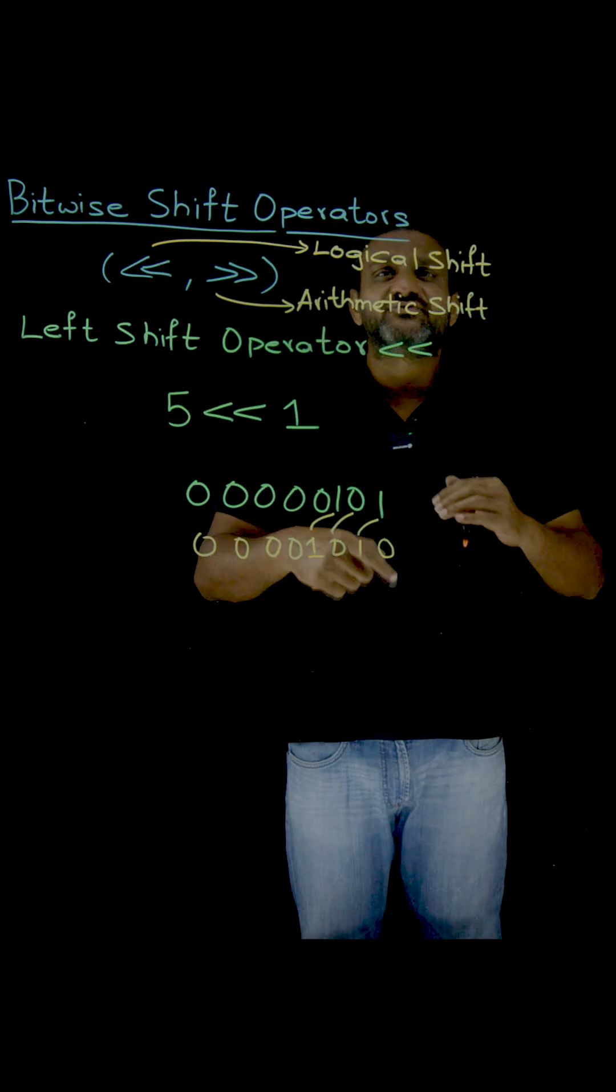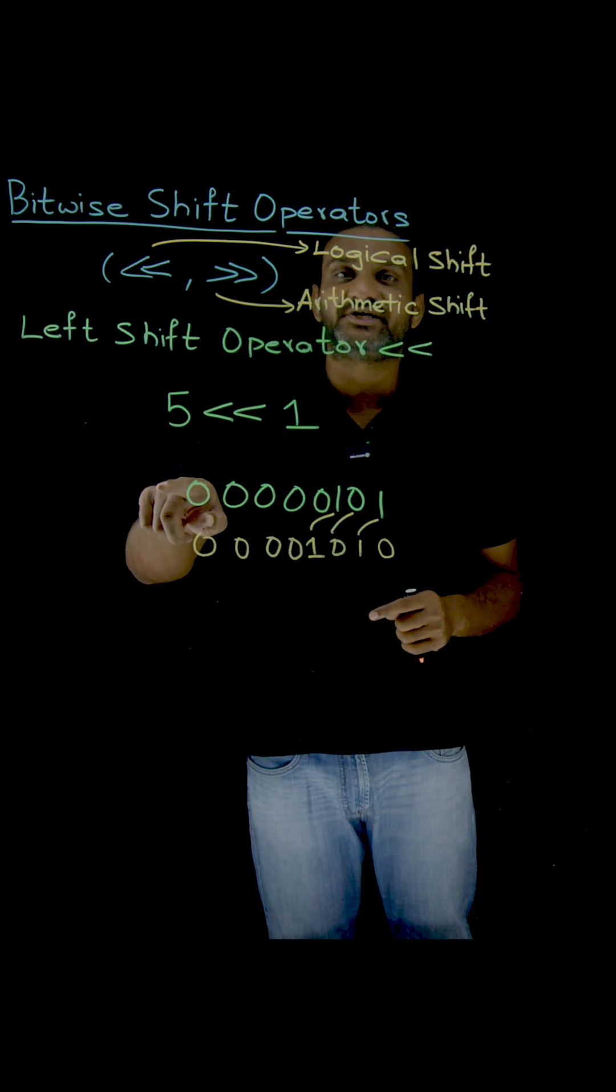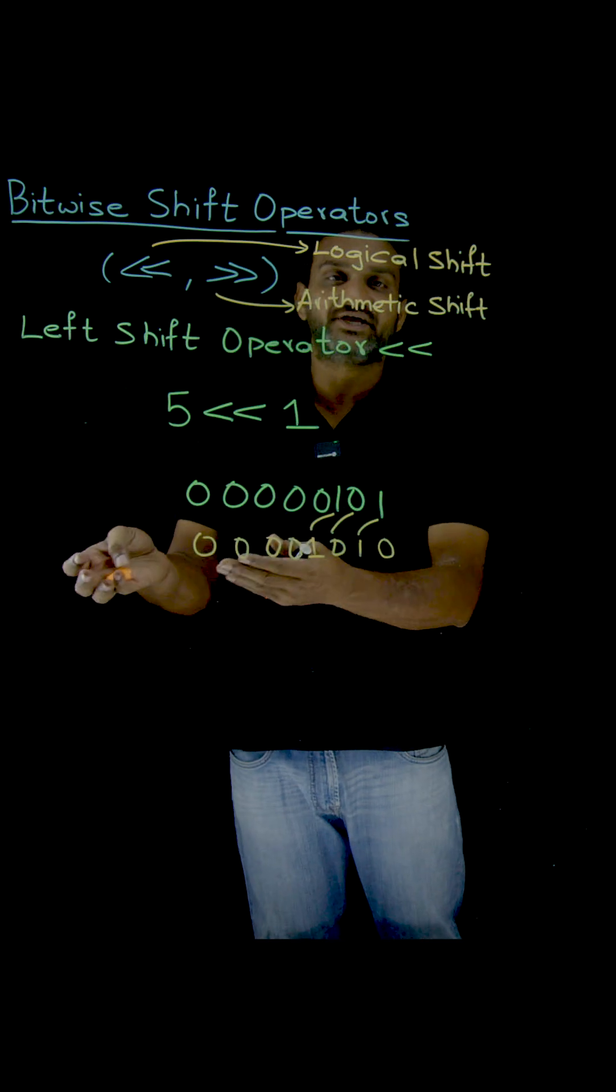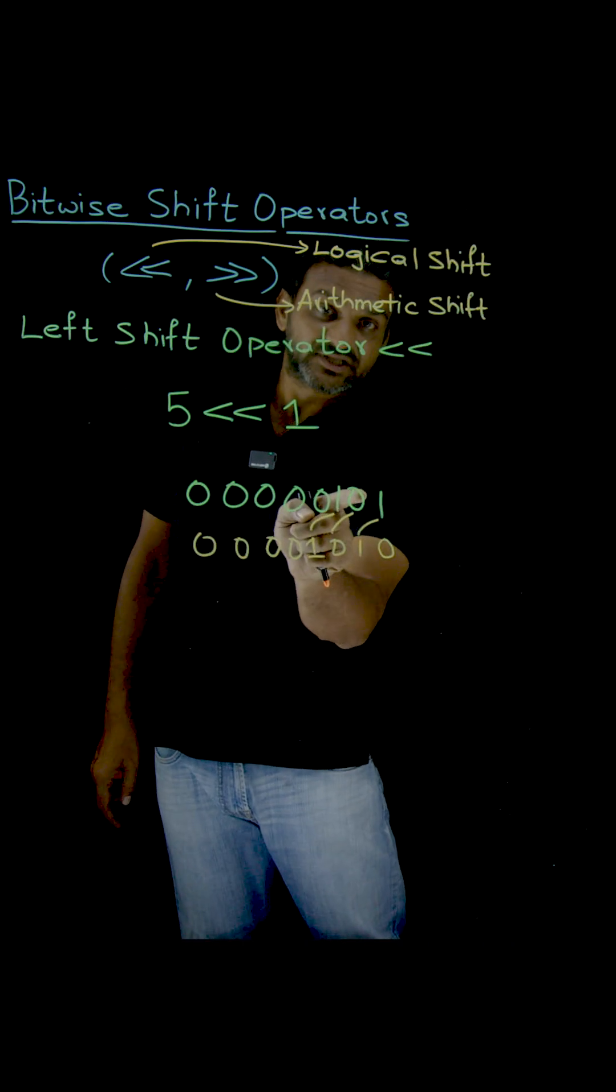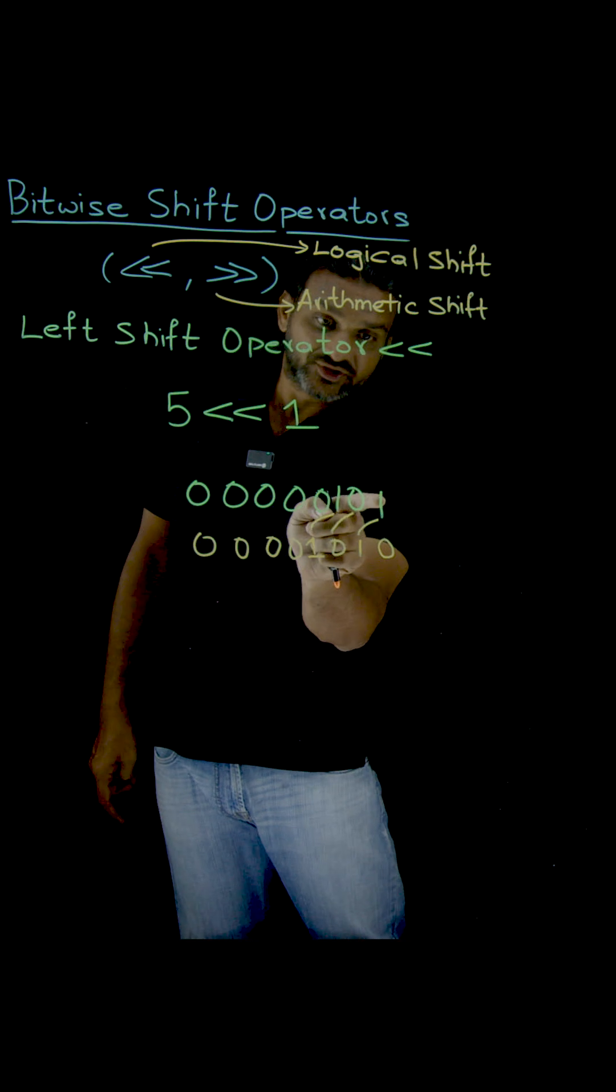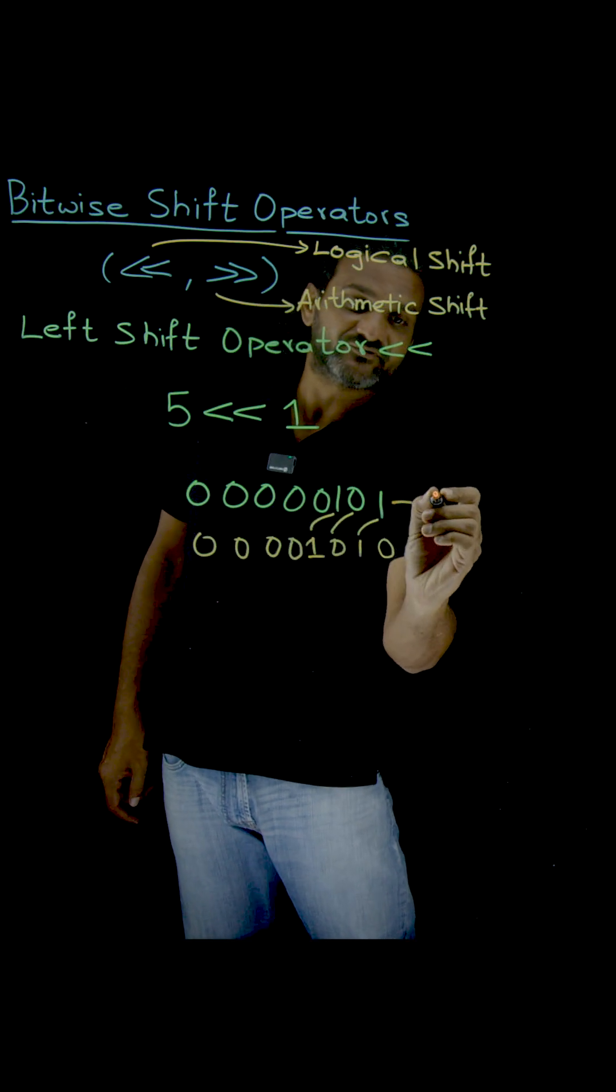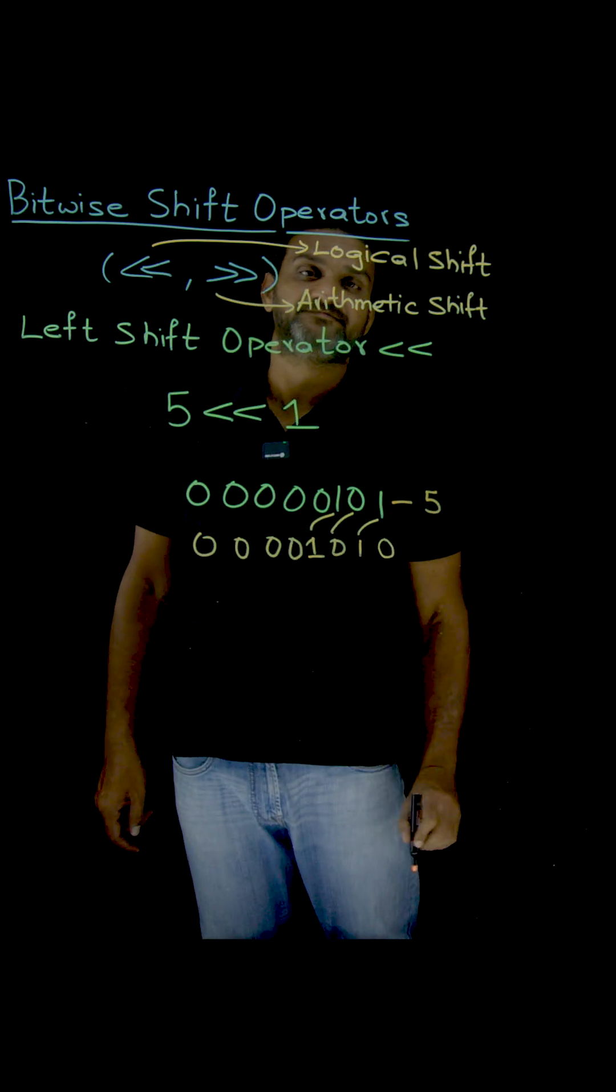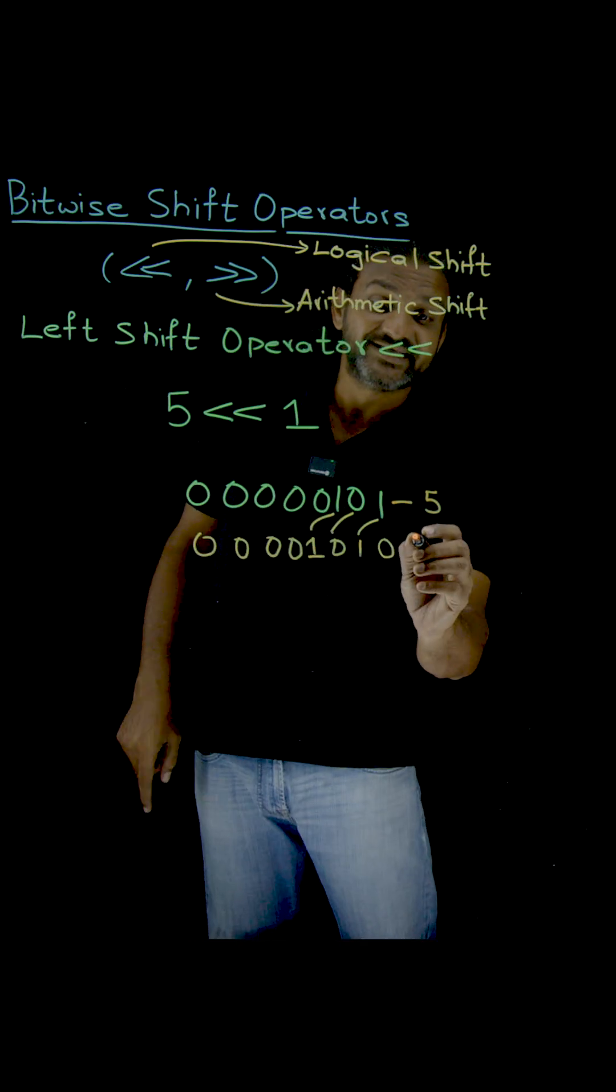Now, what are we going to get from this? Whenever we do a left shift operation, what is the advantage, what is the use of it? Closely observe the values, the binary equivalent values. The decimal equivalent for this binary value is 5. We know that. And what is the decimal equivalent of this binary value after left shift? It is 10.